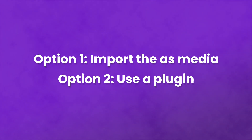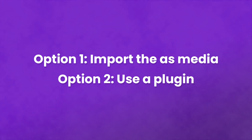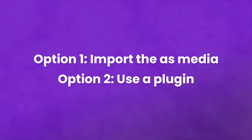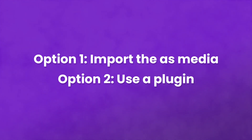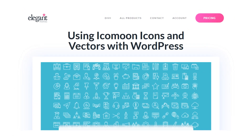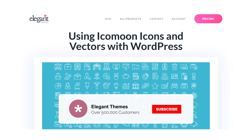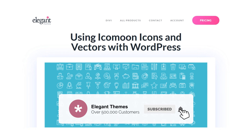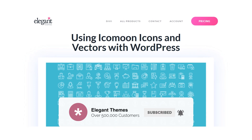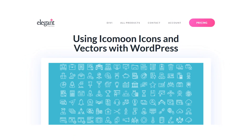And there you go, now you know how to use Icomoon icons and vectors with WordPress. You can either one, just import them as media if you have SVG support enabled, or two, you can use a plugin like WPSVG icons. If this video helped you, then be sure to give it a like and subscribe for more content. Thanks for watching and we'll catch you in the next one.